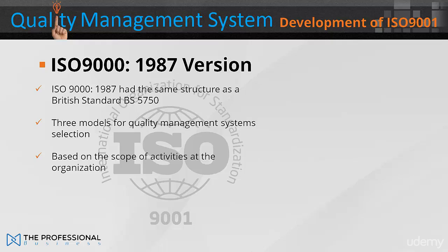The ISO 9000 had the same structure as the British standard BS 5750, with three models for quality management systems selection, for which the choice was based on the scope of activities at the organisational level.